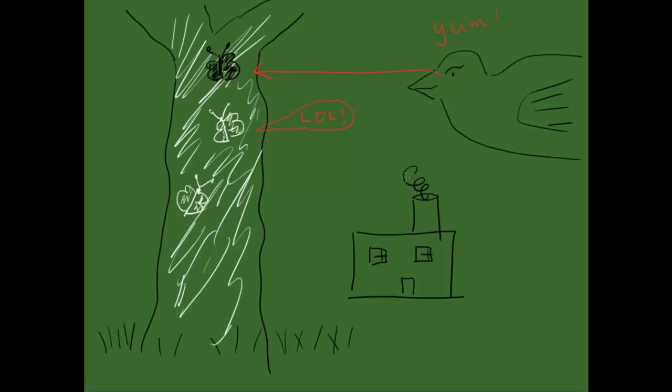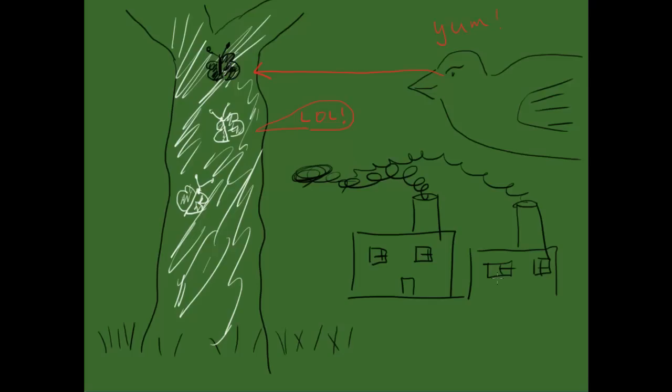But then, in the early 1800s, England's industrial revolution changed everything for the moths. Manufacturing started to boom and more and more factories developed. Factory smoke and pollutants discolored the white birch trees and the environmental conditions started to change. The once white trees were now dark and hid the black moths from the dangerous predators. Now the white moths were the unfortunate ones and the black moths were the ones better suited for survival.